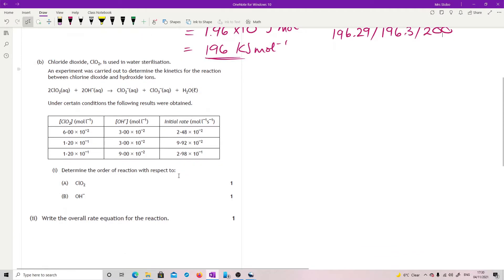So you can tell straight away this is a rates question, like rate equation, because you've got a data table with initial rates and concentrations. So chlorine dioxide, ClO2, is used in water sterilization. An experiment was carried out to determine the kinetics for the reaction between chlorine dioxide and hydroxide ions. Okay, so we have an equation. However, don't be fooled by that. These numbers here, the stoichiometry of the equation, has nothing to do with your final rate equation.